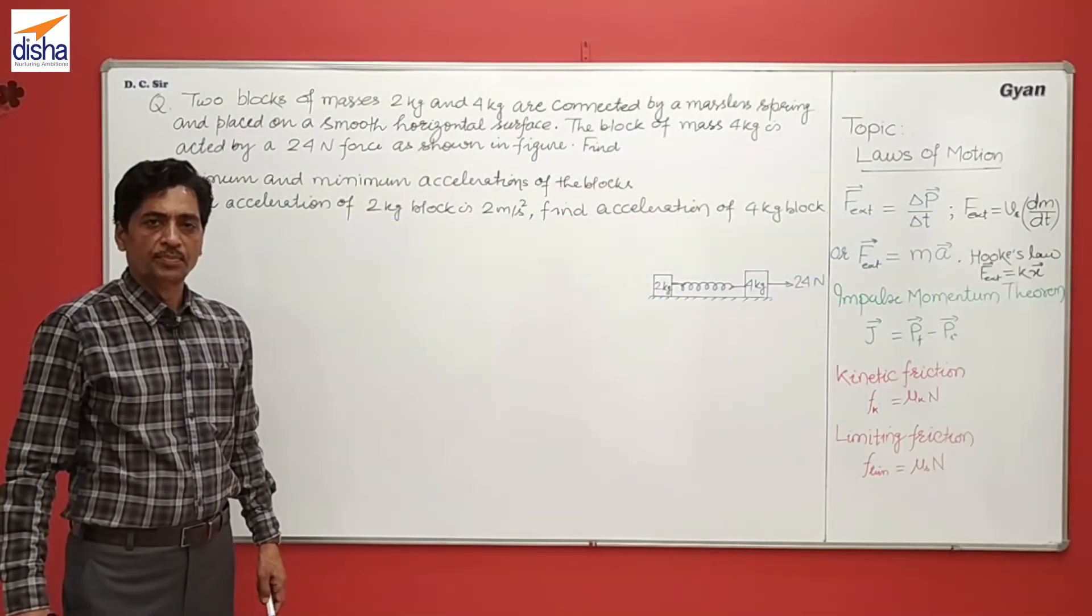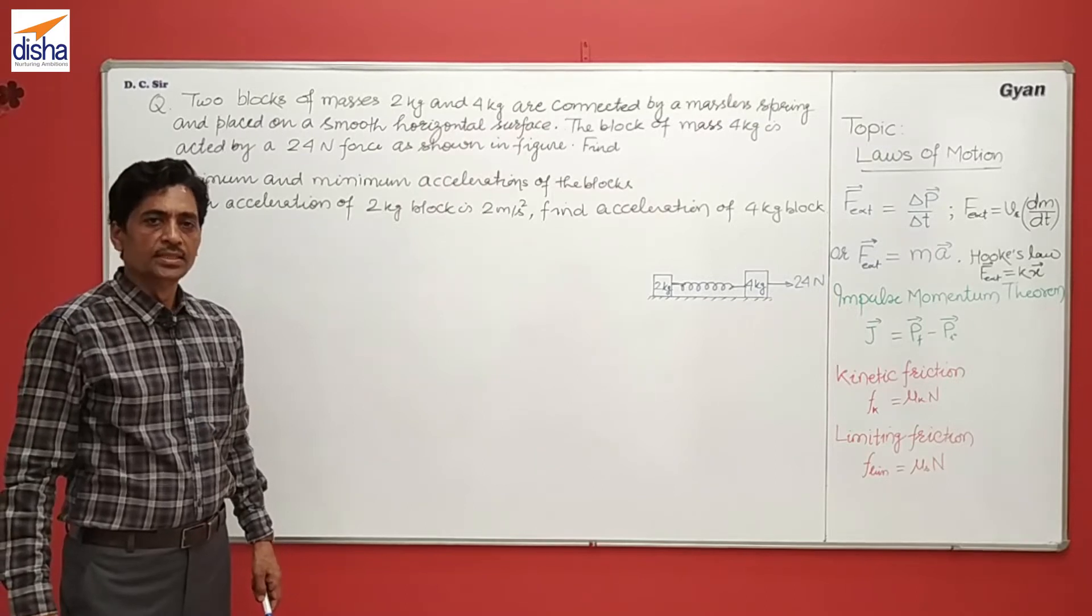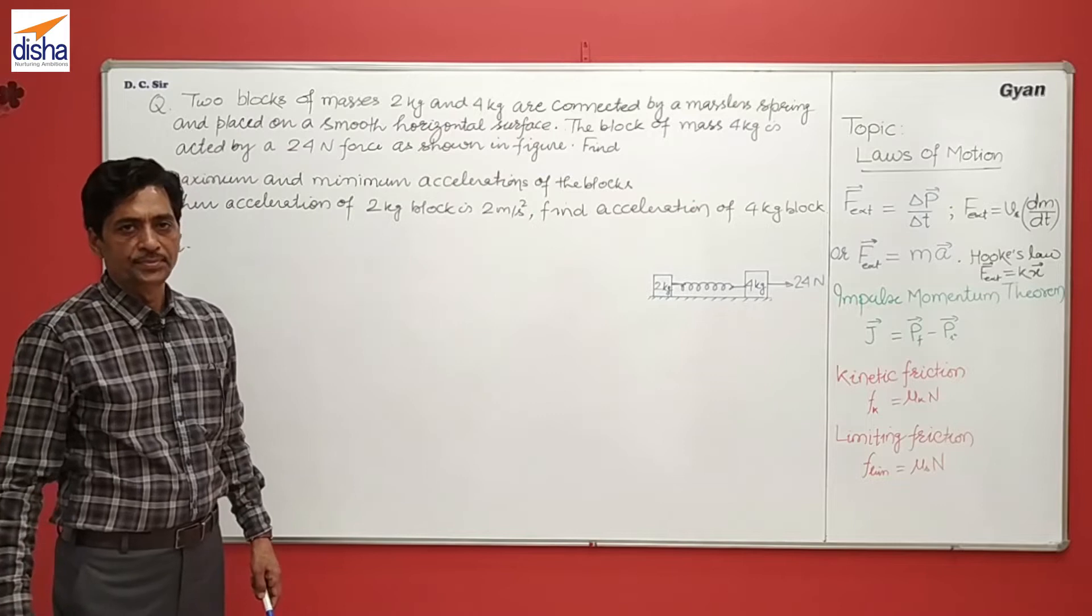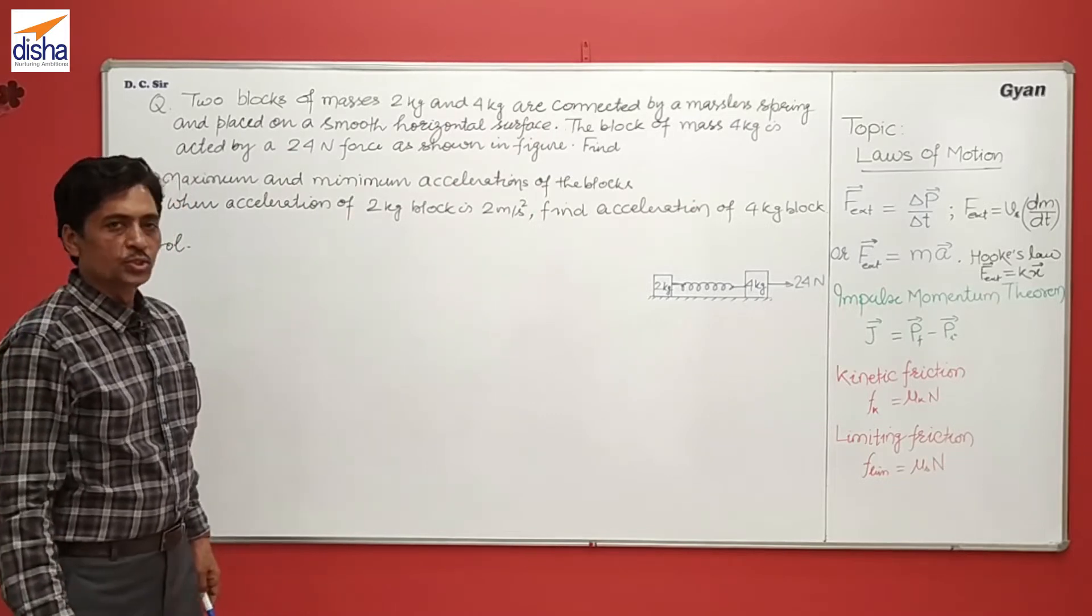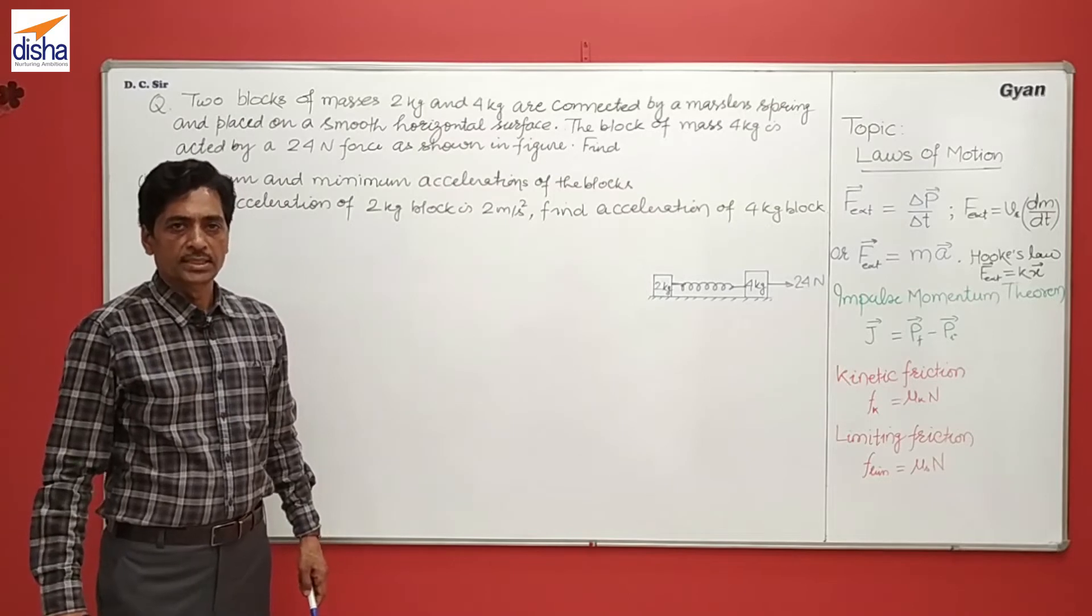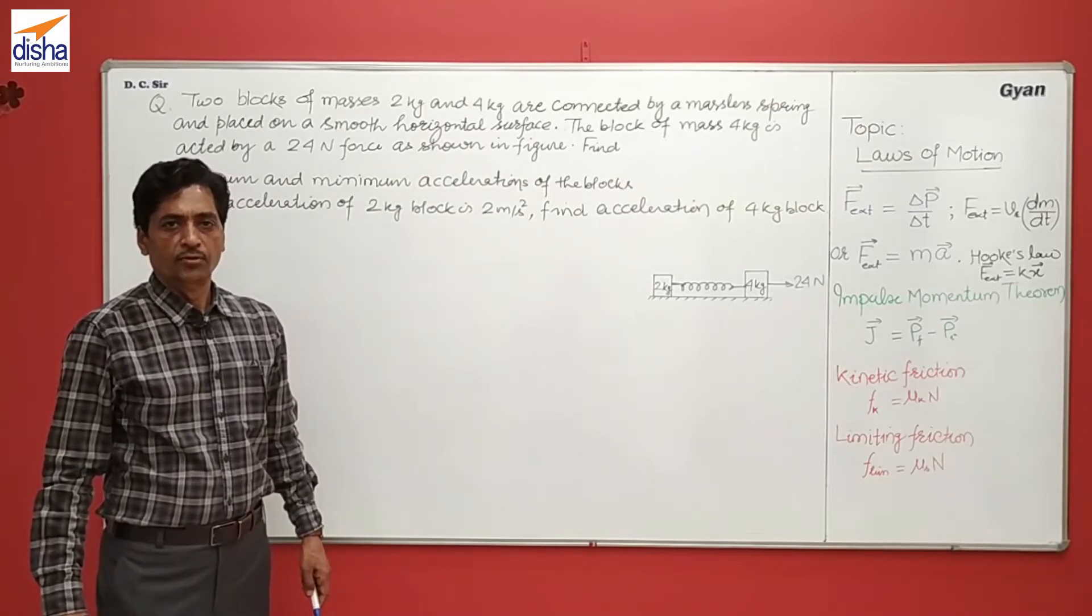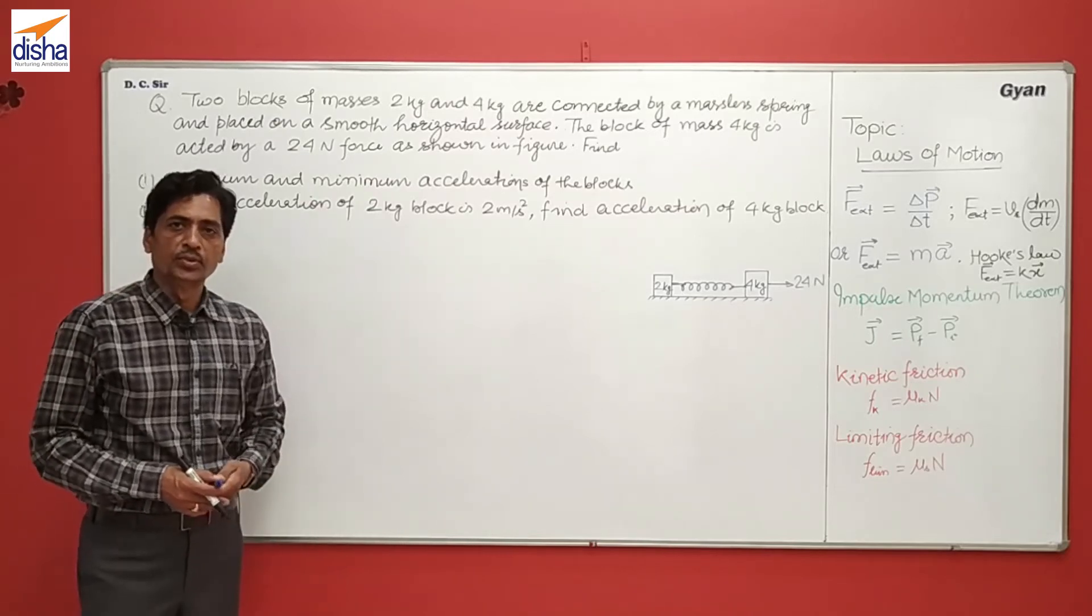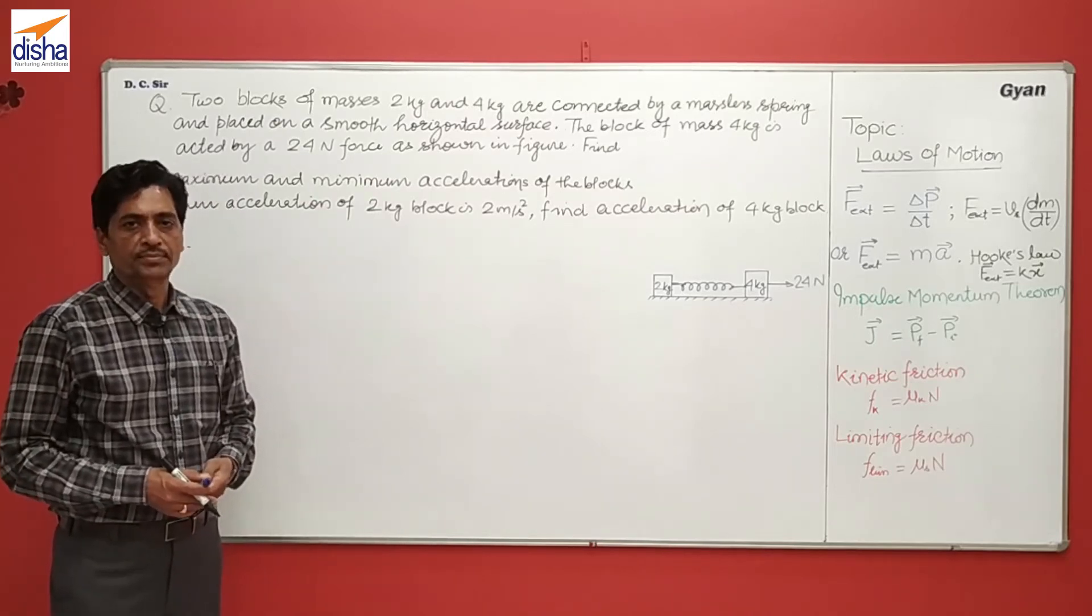Students, I am going to discuss a problem of motion. The specific device is a spring device in which we use Hooke's law. The problem is: two blocks of masses 2 kg and 4 kg are connected by a massless spring and placed on a rough horizontal floor. The block of mass 4 kg is acted upon by a 24 Newton force as shown in the figure.